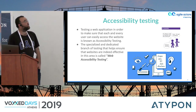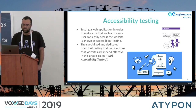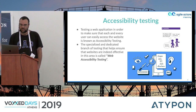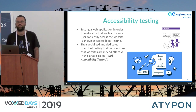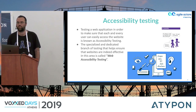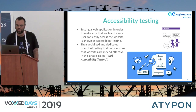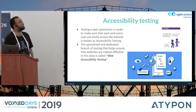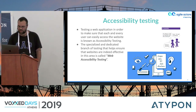So first of all, what is accessibility testing? It is testing a web application in order to verify that it is accessible by people with disabilities. This is part of usability testing and is called web accessibility testing.